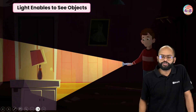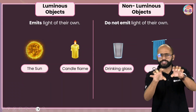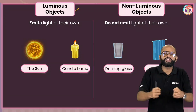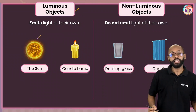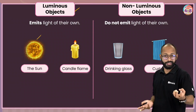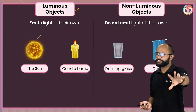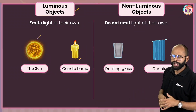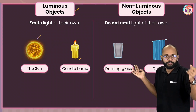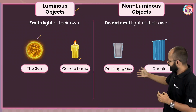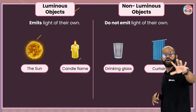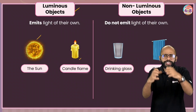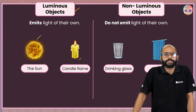We can categorize objects into two types. First, luminous objects — objects which give off their own light. For example, the sun gives off light on its own; a candle flame gives off light. Both are luminous objects. Non-luminous objects are objects that do not emit light of their own — like me, a drinking glass, a curtain. If I turn the lights off, you can't see me. These are non-luminous objects.